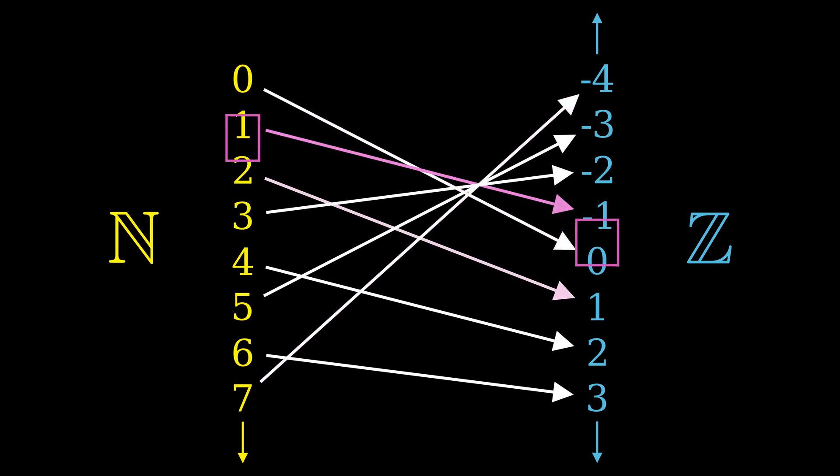So we have a bijection. And since we made the definition that two sets are the same size if there's a bijection between them, we have to conclude that N and Z are in fact the same size. It's a little weird to wrap your head around if you've never seen it before. But that's par for the course with infinity. You make definitions that seem perfectly obvious for finite things, but they often have unintuitive and interesting results when it comes to the infinite.